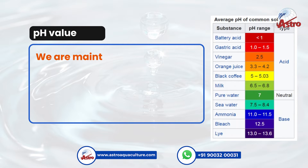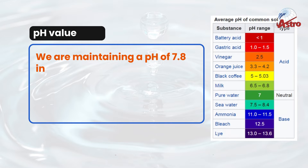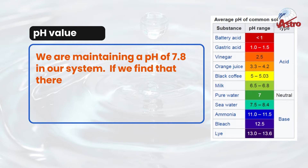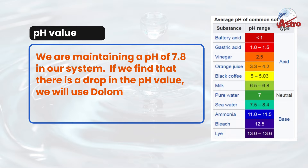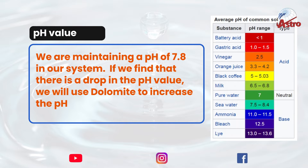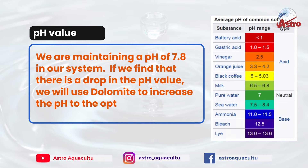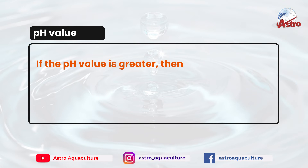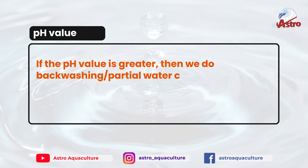We are maintaining a pH of 7.8 in our system. If we find that there is a drop in the pH value, we will use Dolomite to increase the pH to the optimum level. If the pH value is greater, then we do backwashing and partial water change to reduce the value.